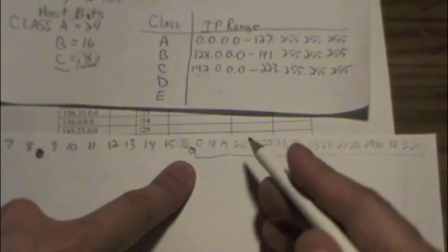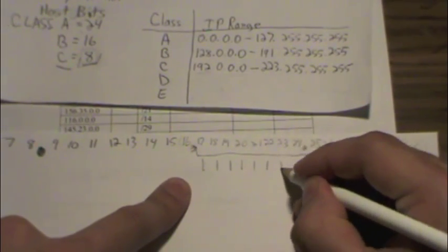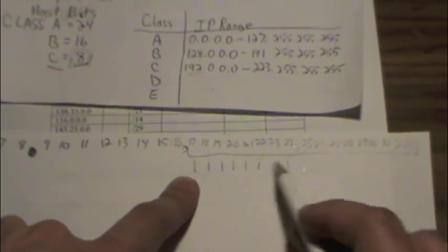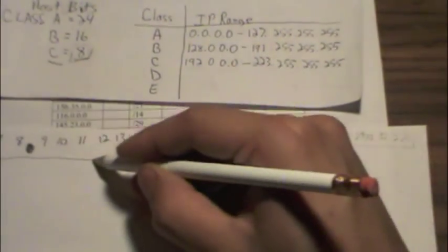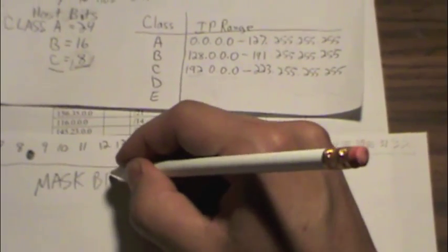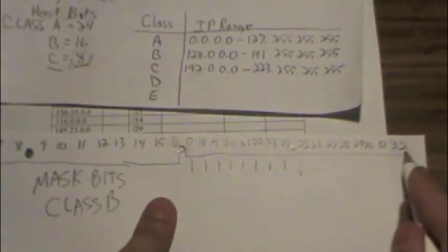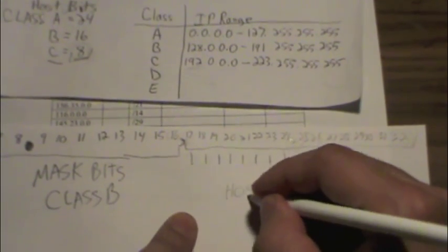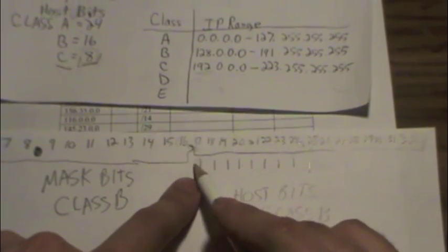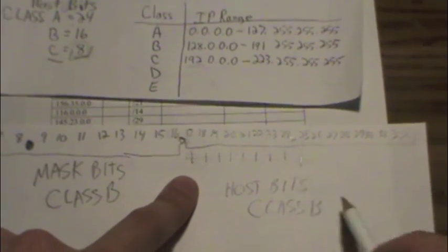So if we have 1s all the way across, 21, 22, 23, 24, and 25, how many did we borrow from the host area? So this is the mask bits for a Class B, and these are the host bits for a Class B, but we're masking all the way into it. So we're borrowing those bits from the hosts.